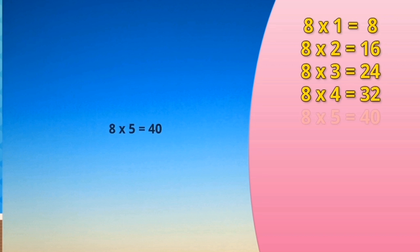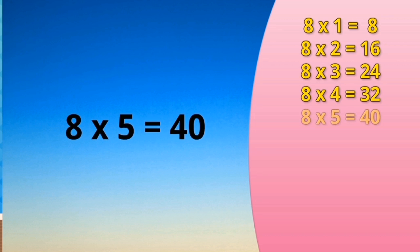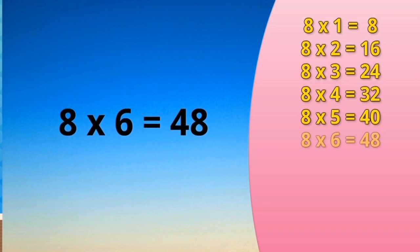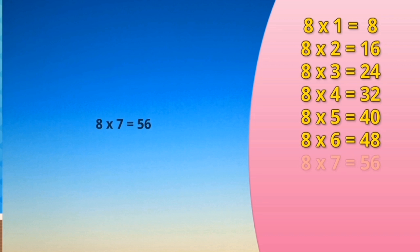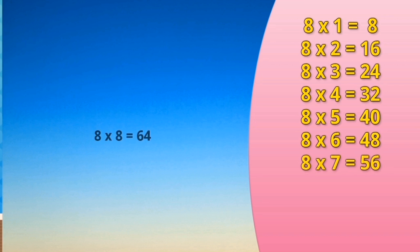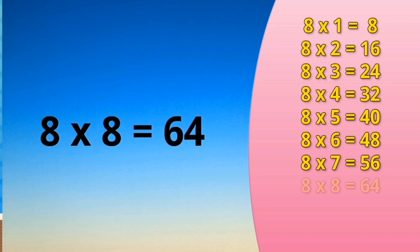8 times 5 is 40. 8 times 6 is 48. 8 times 7 is 56. 8 times 8 is 64.